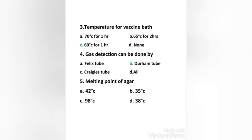Next question: gas detection can be done by — Felix tube, Durham tube, Craig's tube, or none? The right answer is option B, Durham tube. Durham tubes are used in microbiology to detect production of gas by microorganisms. They are simply smaller test tubes inserted upside down in another test tube. This small test tube is initially filled with the solution in which the microorganism is to be grown. If gas is produced after inoculation and incubation, a visible gas bubble will be trapped inside the small test tube.